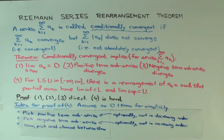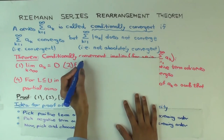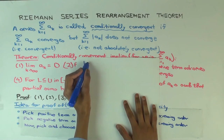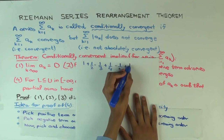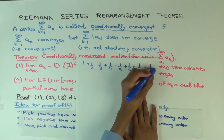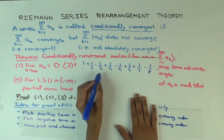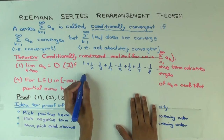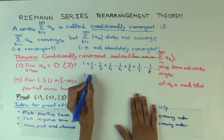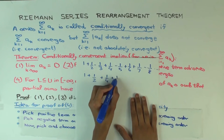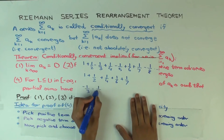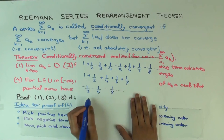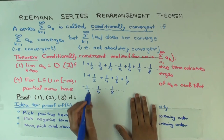Here's the idea: we first divide the series into the positive term subseries and the negative term subseries. For example, given some series, the positive term subseries would be terms like 1, 1/2, 1/4, 1/6, 1/7, and the negative term subseries would be terms like −1/3, −1/5, −1/8.